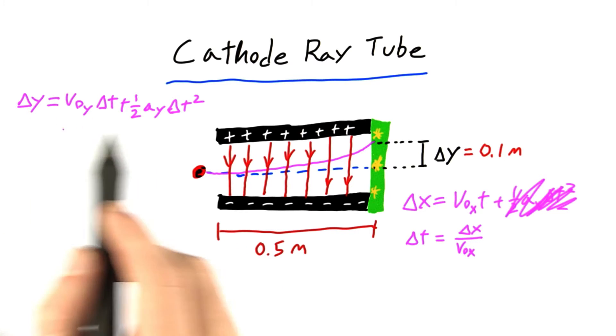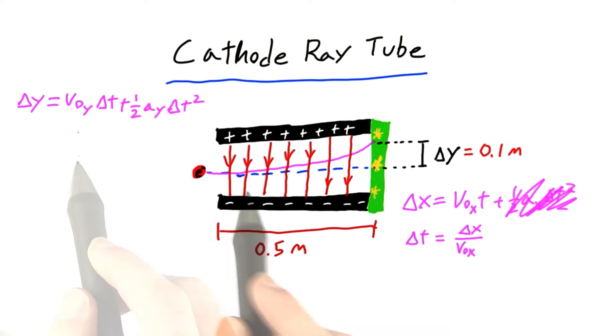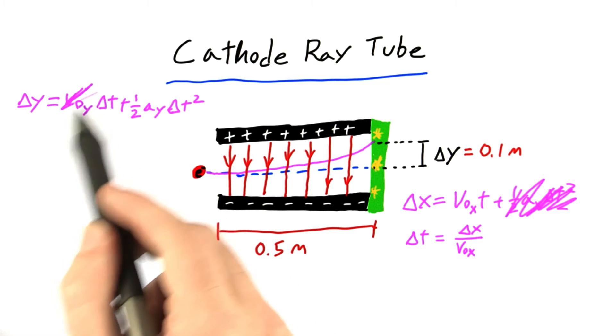Alright, so now I'm going to use this kinematics equation to work in the y direction. And we know that initially the electron enters with only the velocity in the x direction. So this term goes to zero.